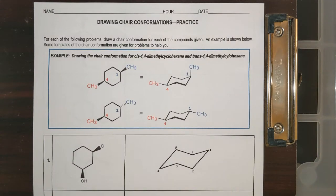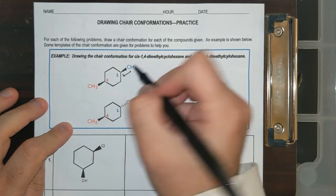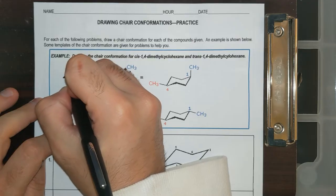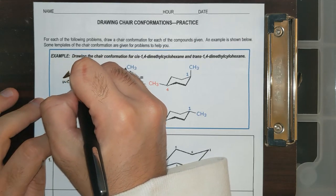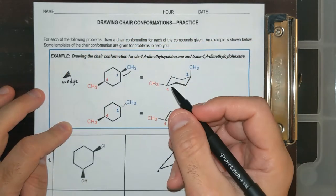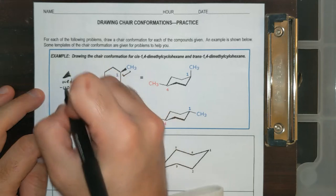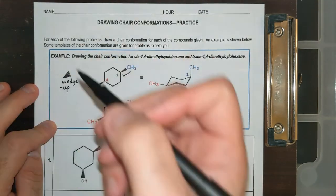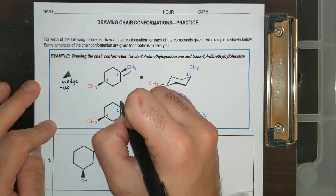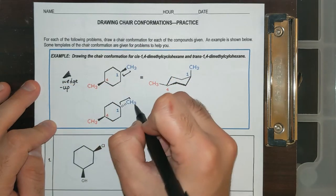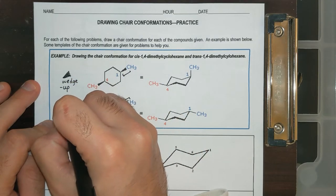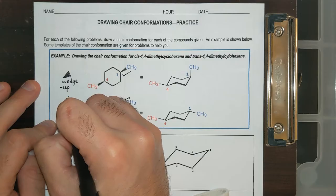Hey again, Organic Chemistry. I wanted to help set you up for your drawing chair conformations practice. There's a new type of notation you're going to have to learn in this worksheet that we'll be using more of in the rest of this unit. There's this thing that looks kind of like a triangle — this is known as a wedge, and it means that a group is going up. And then we have this other one that looks like dashes, also like a triangle — this is known as a dash, and it means down.